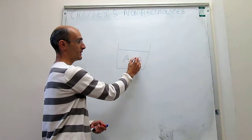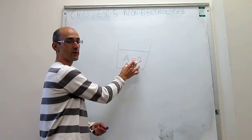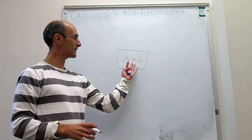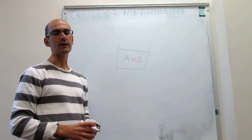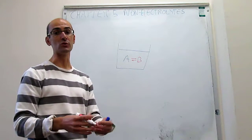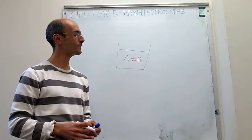A might be a reagent and B might be a product, so these two can interconvert with each other. It turns out that to understand chemical reactivity, it's very important to understand the thermodynamics when you mix two liquids to start with.